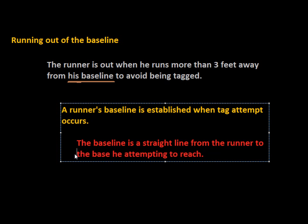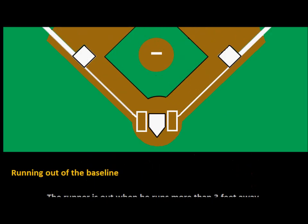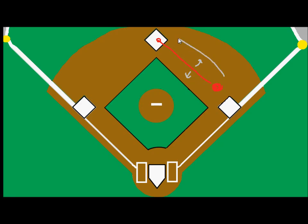This is not a straight line from base to base — it's actually a straight line from the runner to the base. So what we're talking about is not a fixed line with three feet on either side. That is not the baseline for this rule. It completely depends on where the runner is standing. If the runner is standing here, we draw a straight line from him to the base, and he has three feet on either side of that.